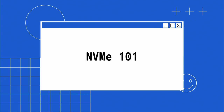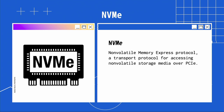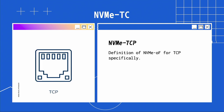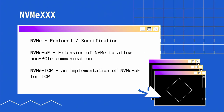Let's review what NVMe is. NVMe stands for Non-Volatile Memory Express protocol — a transfer protocol for accessing non-volatile storage media over PCIe, or in simpler words, access to your local SSDs over PCIe bus. NVMe-oF is an extension that allows you to access devices over non-PCIe connections, such as Fibre Channel or Ethernet. NVMe TCP is the implementation of NVMe-oF specifically for TCP. So: NVMe is the protocol for accessing SSDs over PCIe; NVMe-oF extends it to non-PCIe connections; NVMe TCP implements NVMe-oF for TCP connections.